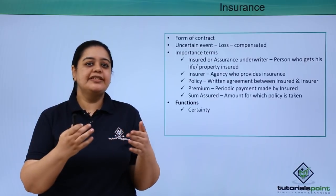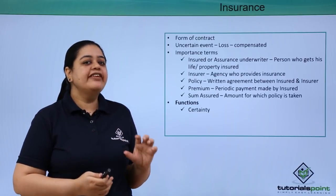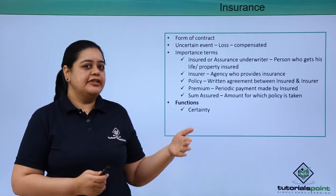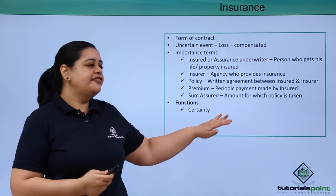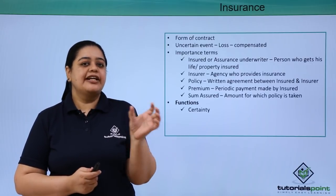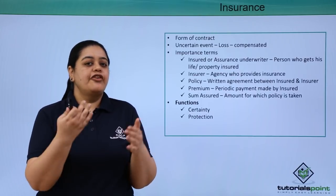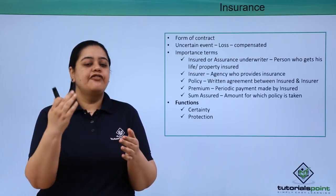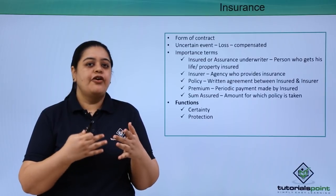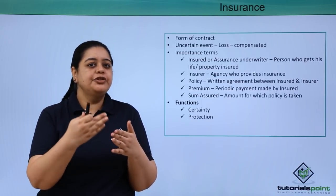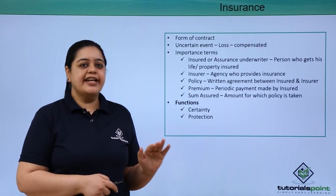Now let's see the functions of insurance. The first function is that it provides certainty. There is an uncertain loss for which you are getting yourself insured. When you take insurance, you give certainty to that uncertain loss because the insurance company agrees to pay you a certain amount if you face a loss. The second function is protection — insurance protects you from business risks such as destruction of goods, theft, or any loss due to natural calamities.